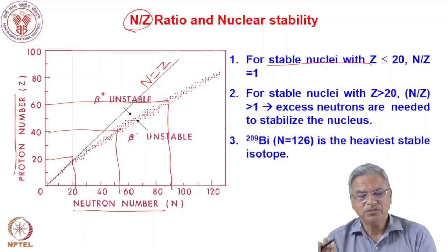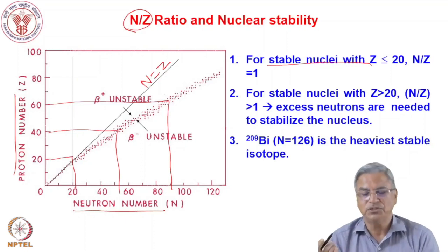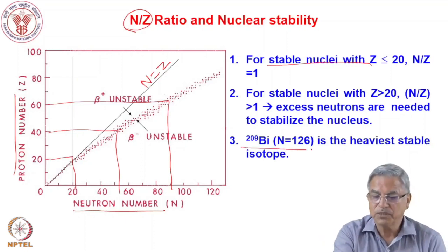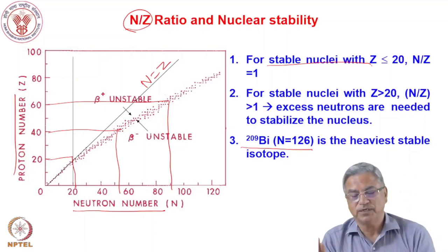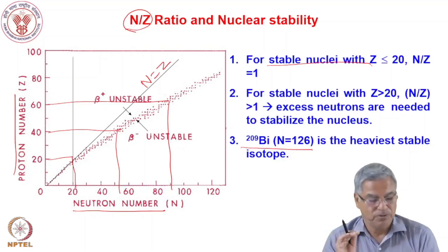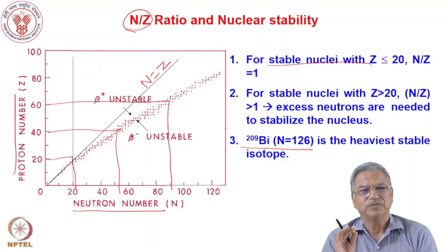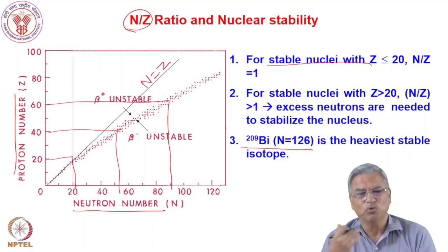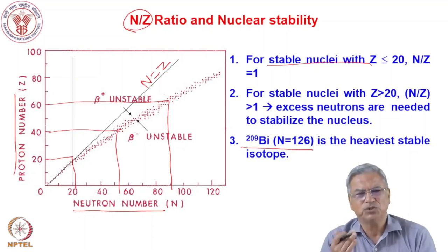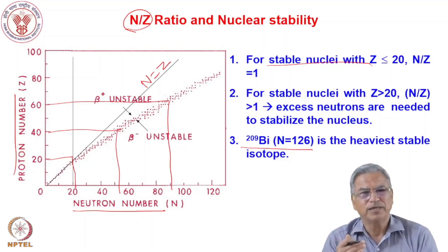The heaviest nucleus that is stable is bismuth-209, with N equal to 126. Beyond bismuth-209, all nuclei are unstable. So both the magic numbers help in stabilizing the nucleus, the pairing energy helps when nucleons are paired up, and the neutron-to-proton ratio has to be within a certain range to make the nucleus stable.